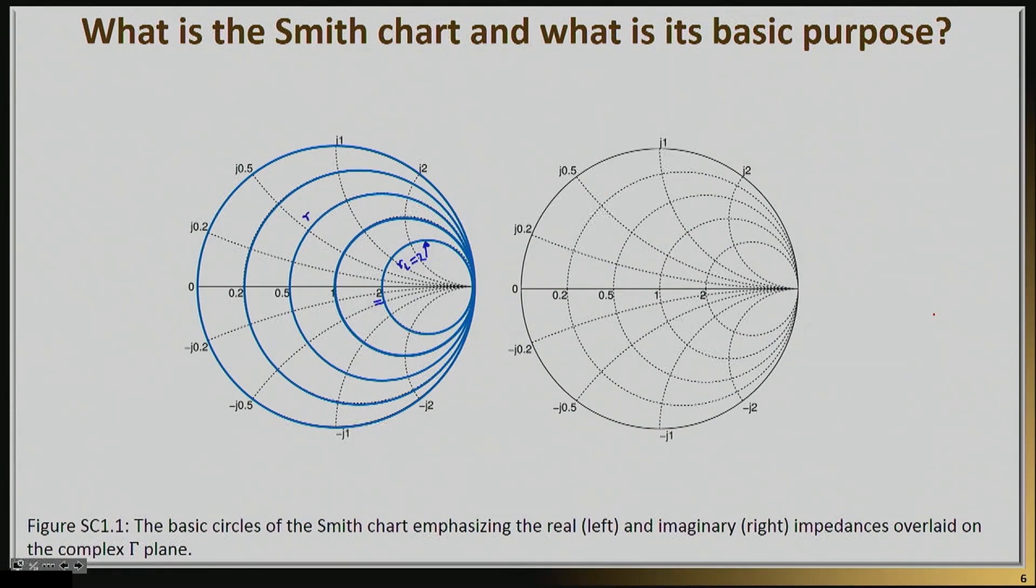And this circle here has the real part normalized to be equal to 0.5, and this one is 0.2, and this one is 0. So that means that the very outer circle has no real part, essentially it's purely imaginary load, and then all of the other loads can basically represent it there.